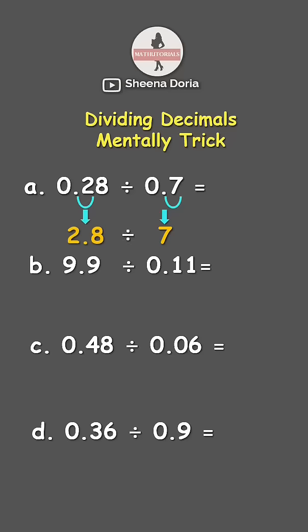Now let us divide 2.8 divided by 7. 2 divided by 7 cannot be since 2 is smaller. So that's going to be 0. Then let's put the decimal point here. Now we need to get the next digit. So that's going to be 28 divided by 7 which is 4. Our answer is 0.4.